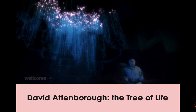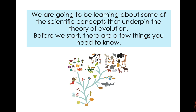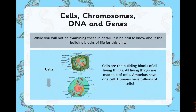I think it's one of the most interesting topics you'll learn about in school. So, as I said, we're just going to be learning some of the scientific concepts that underpin the theory of evolution. Before we start, there are a few vocabulary areas that will come up again and again — you don't need to know them in detail, but you'll learn more when you get to secondary school. We're looking at cells, chromosomes, DNA, and genes. These are the building blocks for life, so it's important to have a basic grasp of what they are.